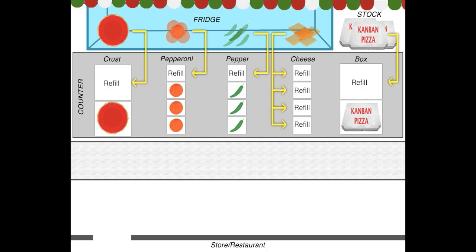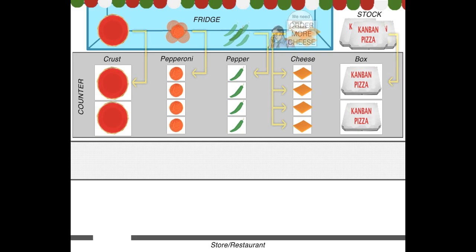As we pull the cheese from the fridge, a new Kanban card appears on top of the leftover cheese. This is telling us that we are running low on cheese, and that we need to order more before we run out of it. Our manager quickly follows the instructions on the sign — he calls the cheese supplier to get us more cheese. The cheese is delivered on time and we avoid running out of fresh cheese.